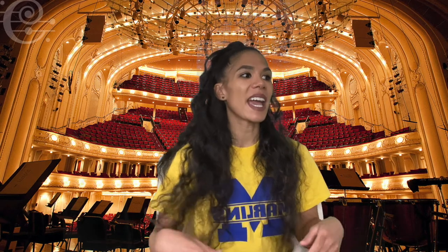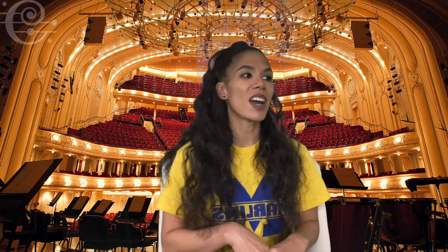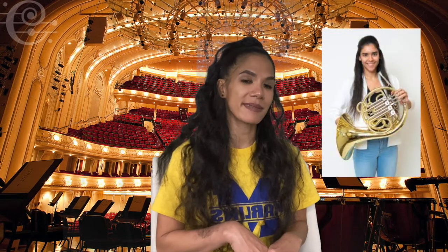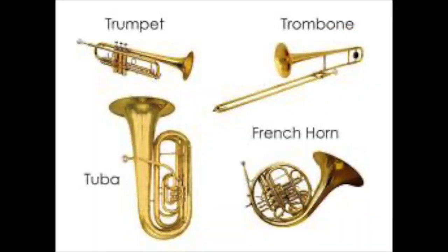Our third family is the brass family, and some instruments that are found in this family are the trumpet, the French horn, the trombone, and the tuba. The main difference between brass instruments and other families is how the vibration to create the sound and notes is made. With a brass instrument, the vibration is created by the lips of the musician. By pressing the lips up against the mouthpiece and blowing, a vibration is created. The rest of the horn helps to amplify the noise and create different notes.